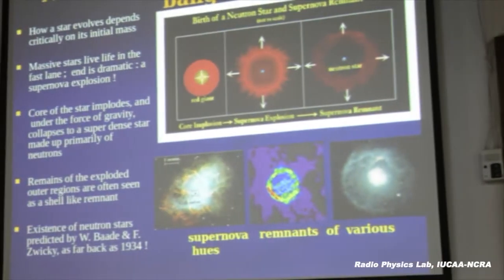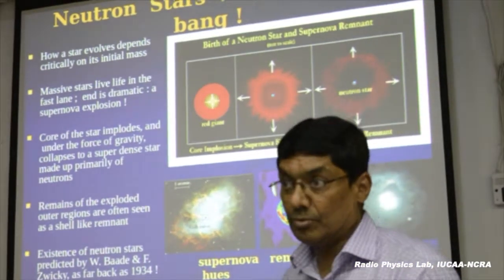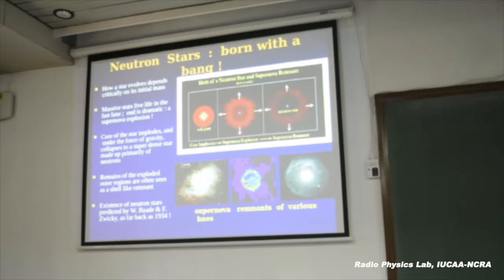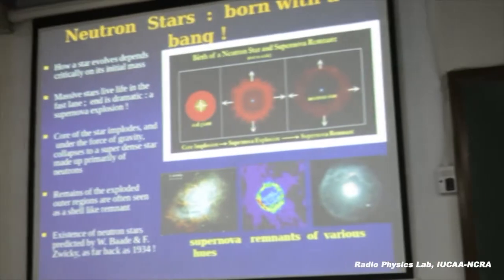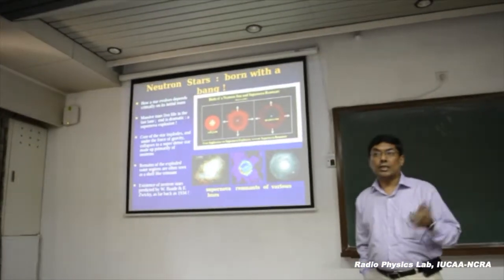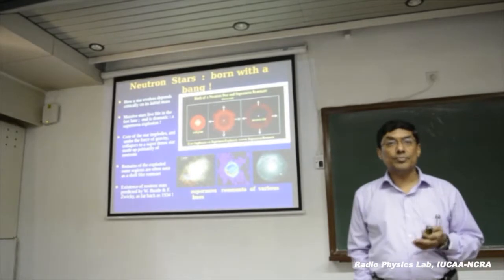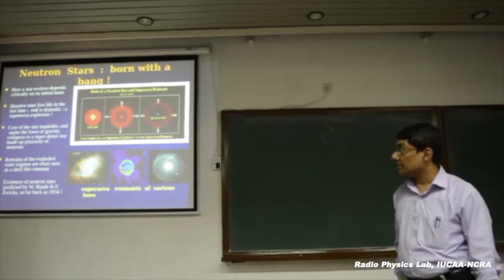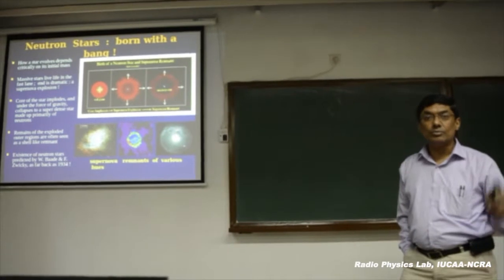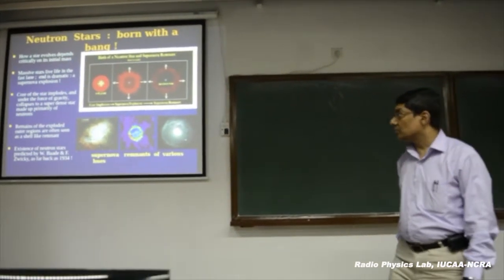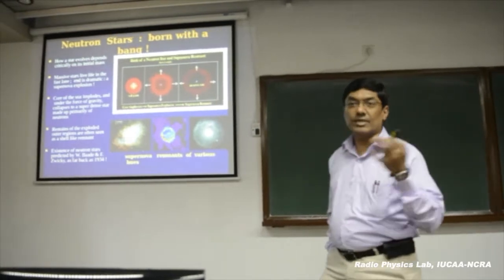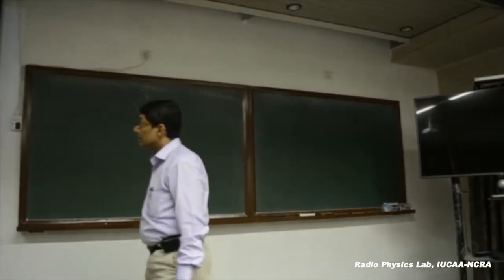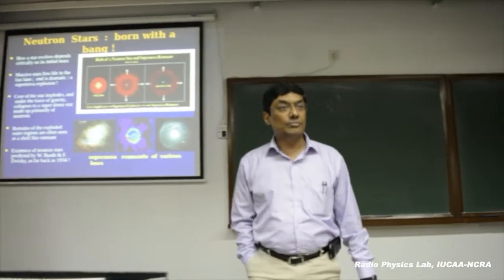First, how are neutron stars born? Most of you know that stars come in different masses and sizes, and how a star evolves through its life history depends critically on its mass. If you study how a star like the sun evolves versus how a star which is much heavier — for example, 8 to 10 times the mass of the sun — they are quite different.